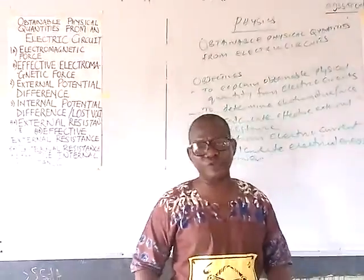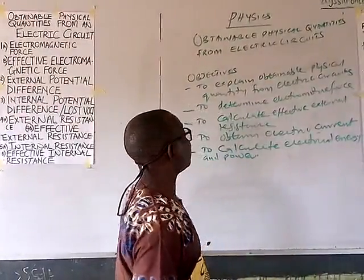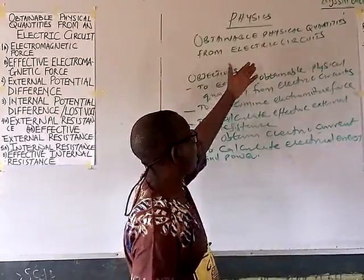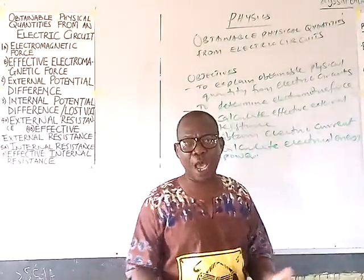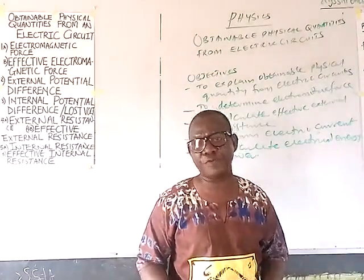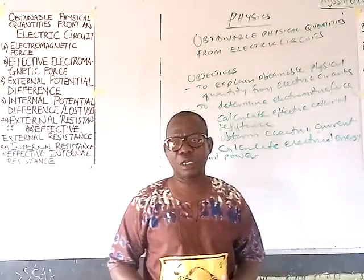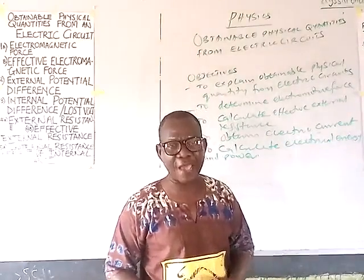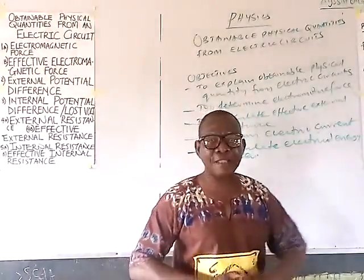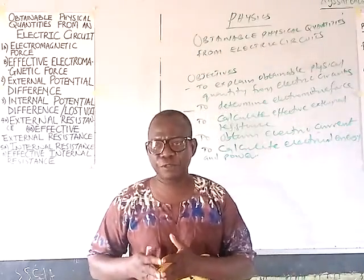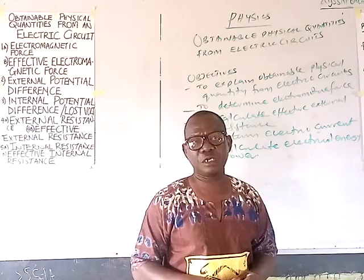The topic we want to consider today is obtainable quantities from electric circuits. Last class, we looked at how electric circuits can be connected, and we also mentioned the physical quantities that can be obtained from electric circuits — that is, the quantities the examiner may ask you to calculate.